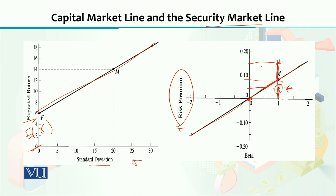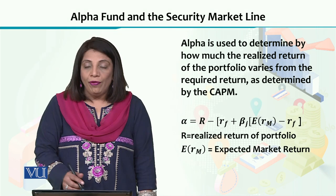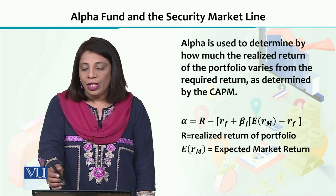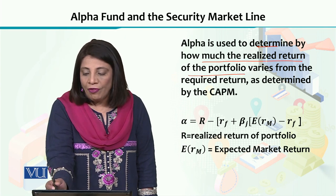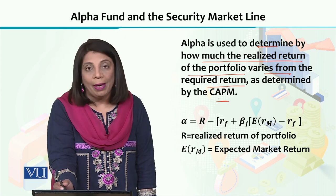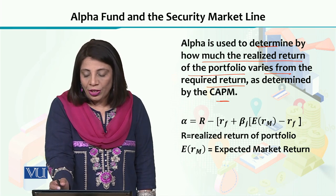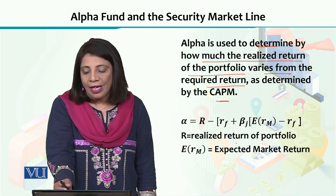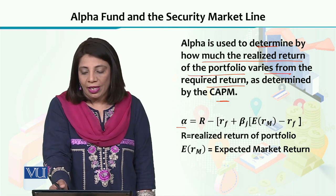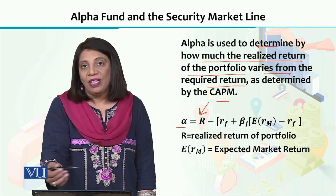Now I am going to explain the concept of alpha, since you have clearly understood the concept of the security market line — what it tells us and how it differs from the capital market line. Alpha is basically used to assess or determine how much your realized return will vary from the required return that we calculate on the basis of CAPM. We take the previously shown SML equation and introduce an alpha term to calculate its value.